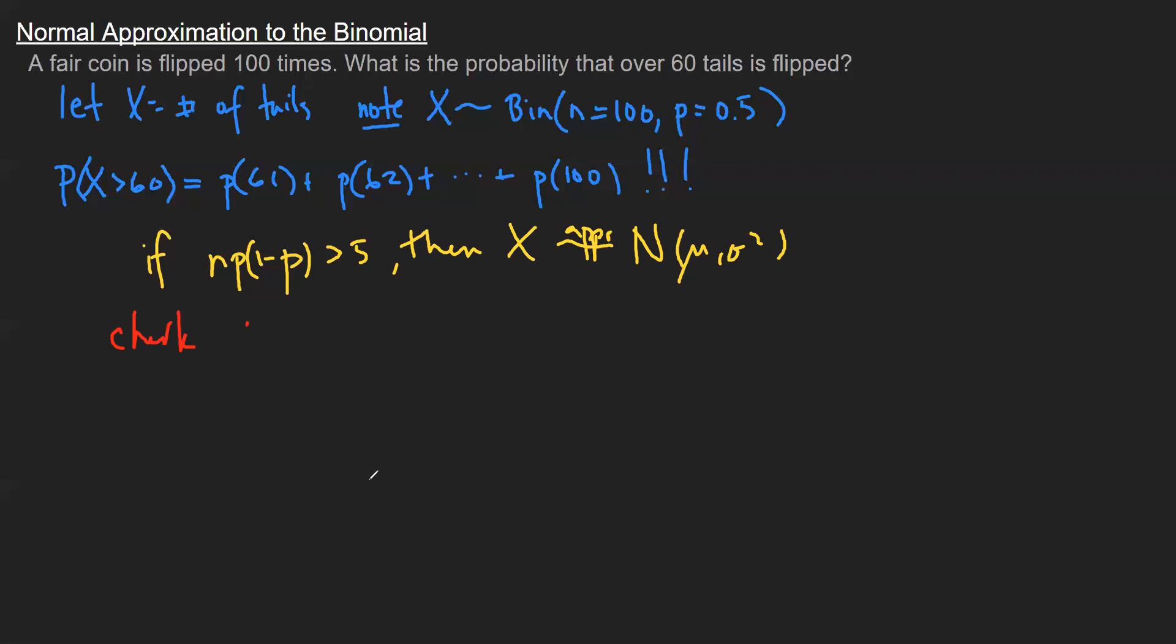So our n is 100, our p is 0.5, and we've got 1 minus 0.5. And so this gives me 25, which is definitely bigger than 5. So what does that mean for us?